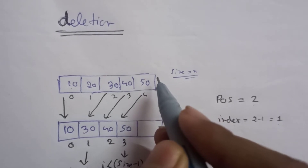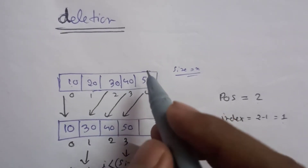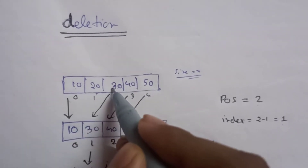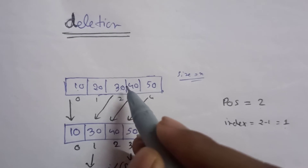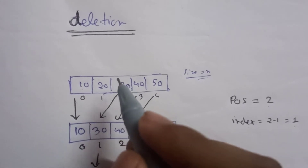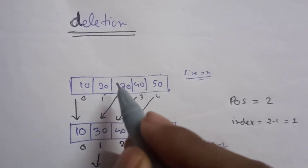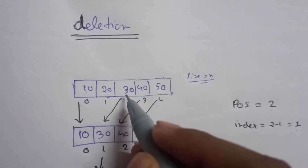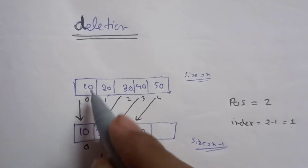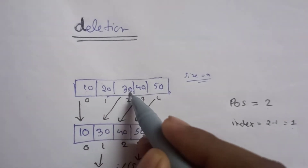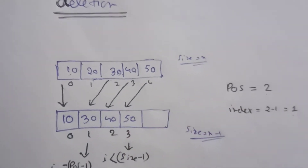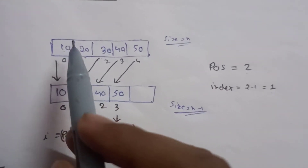If we just delete element 20, the array will no longer be a contiguous allocation. Since arrays require contiguous allocation, we need to shift the elements after the deleted element one step towards the left — just as we shifted them one step towards the right for insertion. So element 10 remains the same, and 30, 40, and 50 shift left by one position.